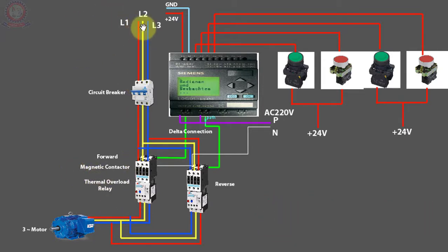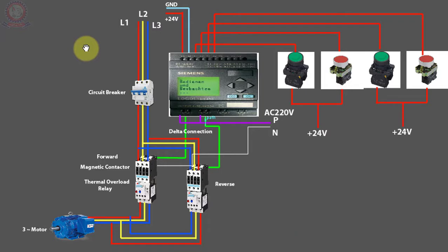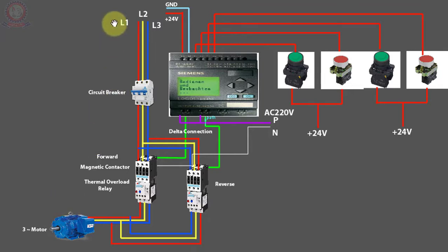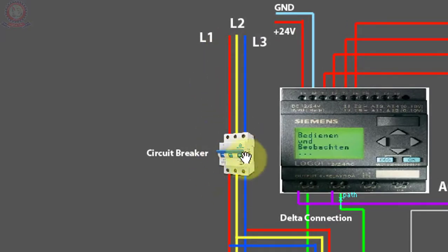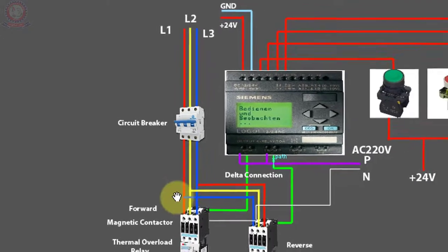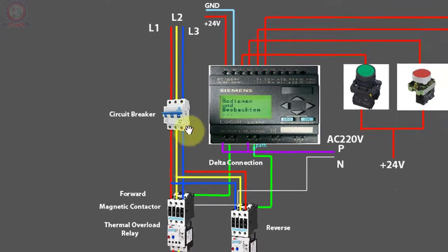This is Line 1, Line 2, and Line 3. This is the earth line and this is the neutral line. This is L1, L2, and L3 — the 3-phase lines. This is the circuit breaker, which provides protection for the circuit.